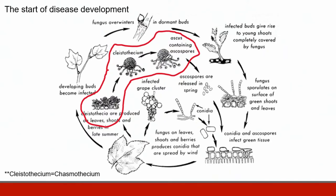The fungus survives the dormancy of the vine by producing Kleistothesia or by living in its asexual form in dormant grapevine buds. In drier and warmer climates, the fungus can overwinter inside dormant buds and initiate infections in the spring when the buds begin to break. However, in the Great Lakes region, overwintering occurs by the formation of Kleistothesia.